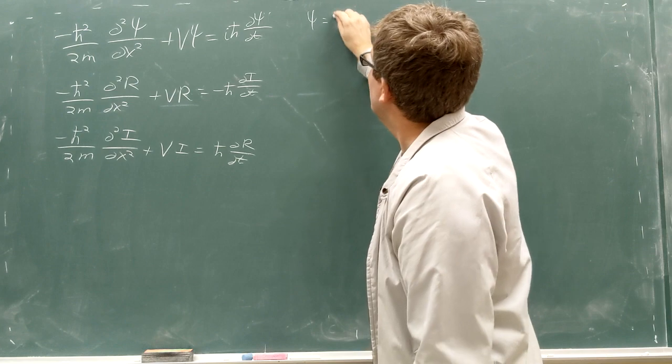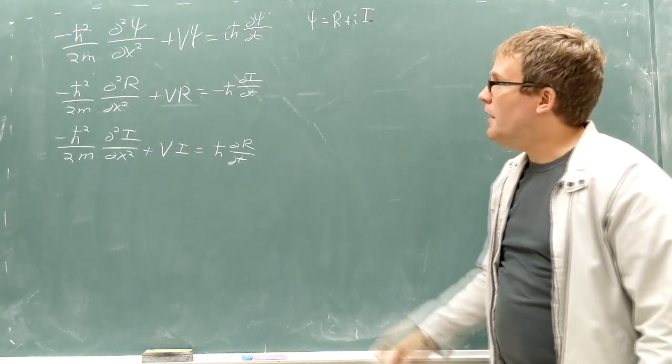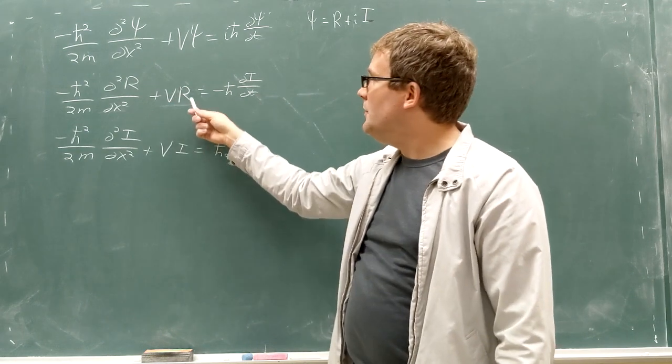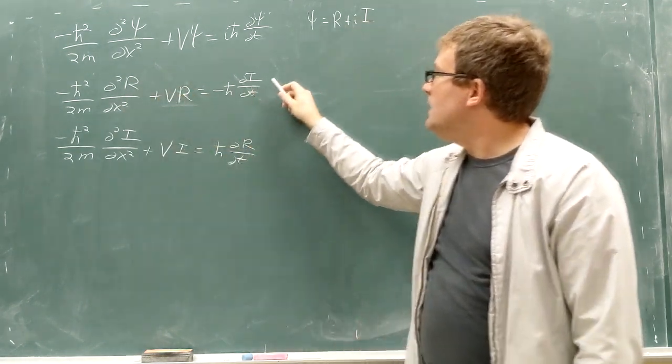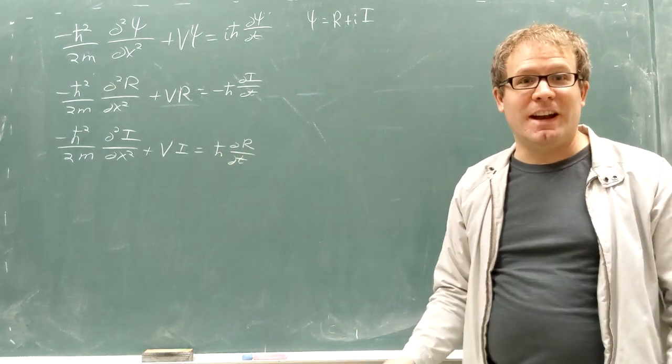So psi, as a reminder, is its real part plus square root of negative 1 times its imaginary part. So we have this piece that tells you how real determines the imaginary part's rate of change and how the imaginary part determines the real part's rate of change.